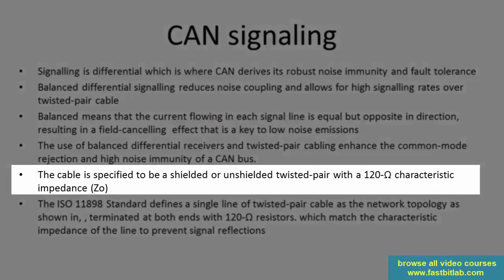The cable is specified to be shielded or unshielded twisted pair with 120 ohm characteristic impedance — what we call Z naught or RL. It is very important that your CAN bus has to be terminated by a 120 ohm resistor on each side.